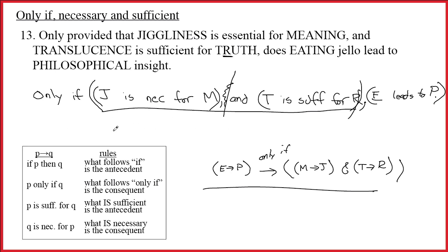The sentence really says: E leads to P, only if J is necessary for M and T is sufficient for R. I don't think this is trivial, but the trick is to break it down into individual pieces and then apply the rules. Good luck.